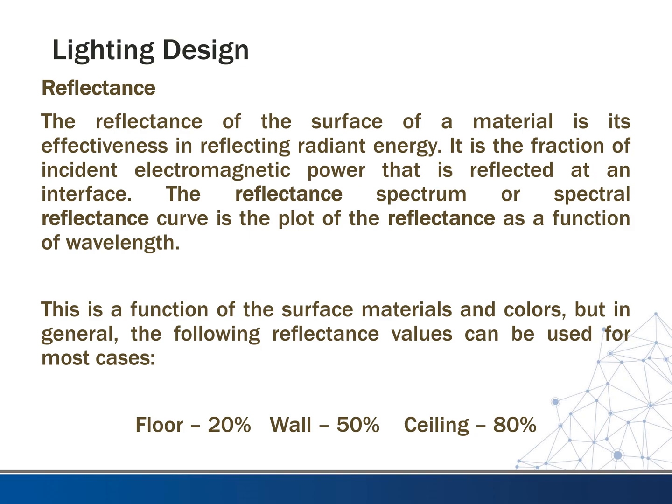Reflectance is the effectiveness of a surface or material in reflecting radiant energy — it is the fraction of incident electromagnetic power that is reflected at an interface. The spectral reflectance curve is the plot of reflectance as a function of wavelength. Default reflectance values for most cases are: floors 20% because floors are usually fairly dark, ceilings 80% because they're almost always white or very light in color, and walls 50% because they're usually a bright color.